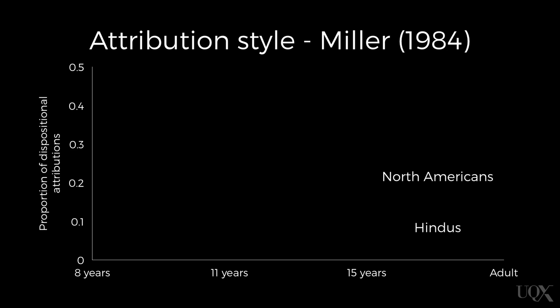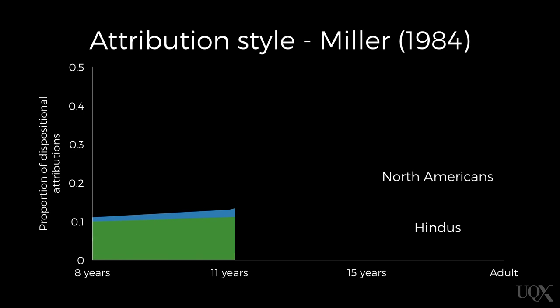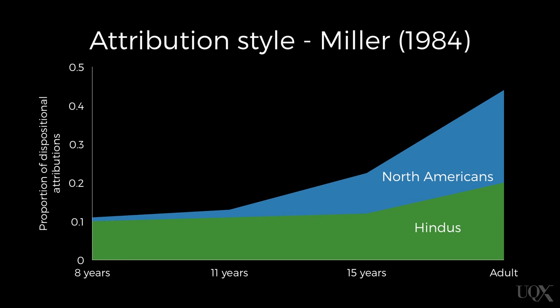Miller compared the types of attributions made by North Americans, who are from an individualistic culture, to those made by Hindu Indians, who are from a more collectivist culture. The older that the participants were, the greater the difference in the types of attributions they made, with North American participants making more internal, dispositional attributions. The idea is that in individualistic cultures, individual achievement is valued, and so individuals' goals and attributes are more likely to be seen as causal when explaining behaviour.